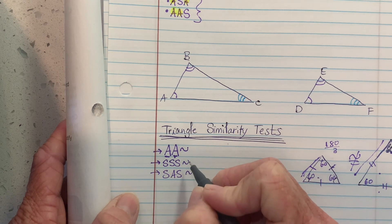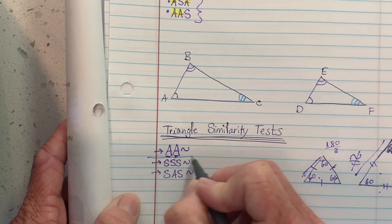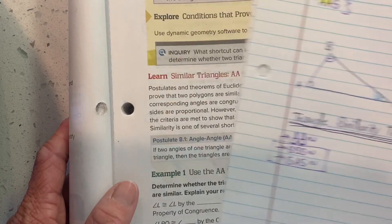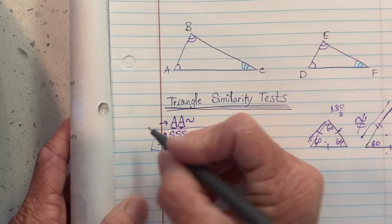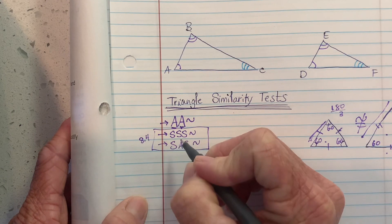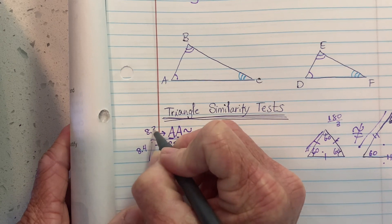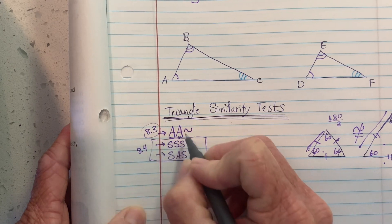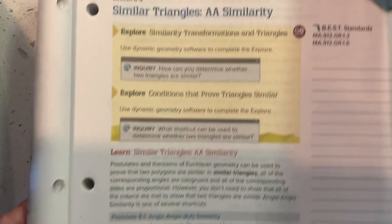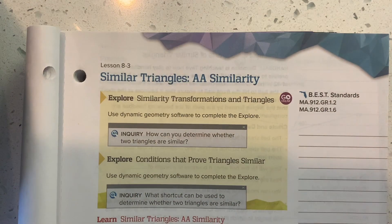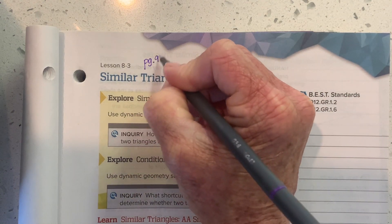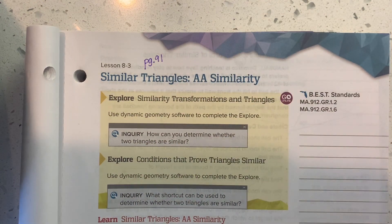Those are the only three similarity tests. We will look at side-side-side and side-angle-side in section 8.4. Today in 8.3, we'll look at how you use angle-angle similarity. Section 8.3 begins on page 91 in the workbook.